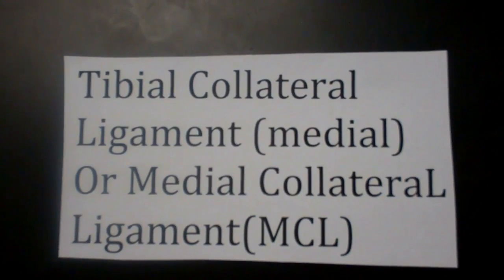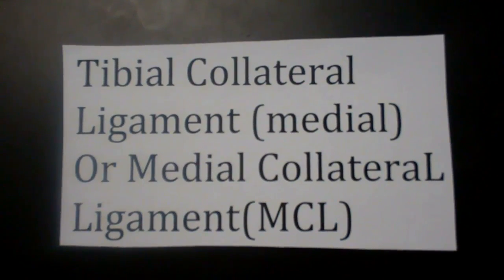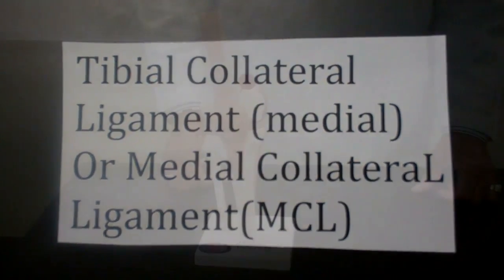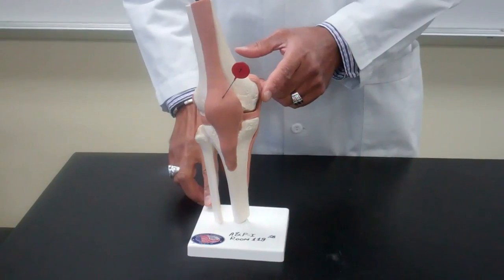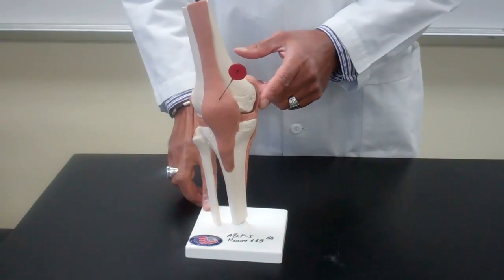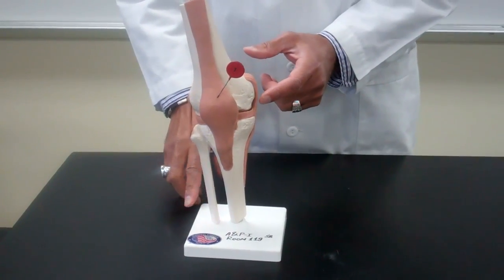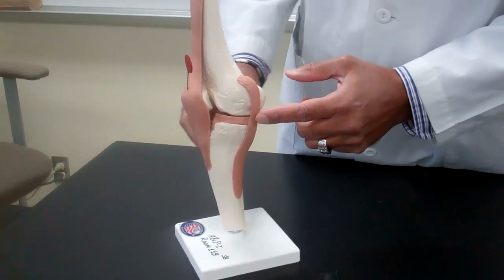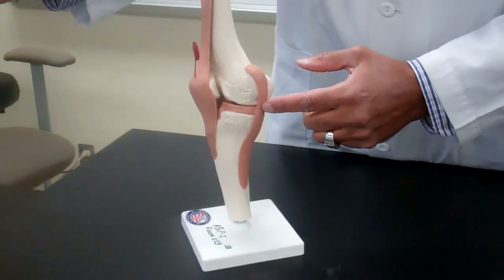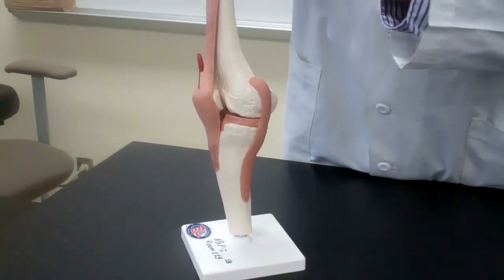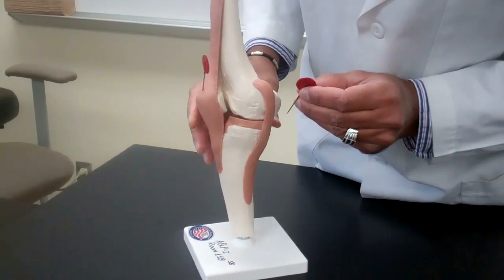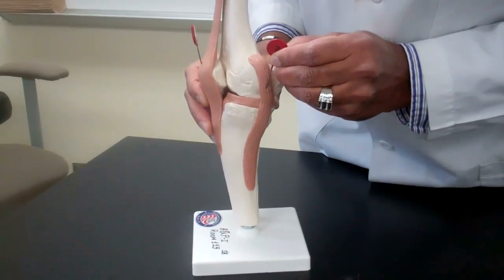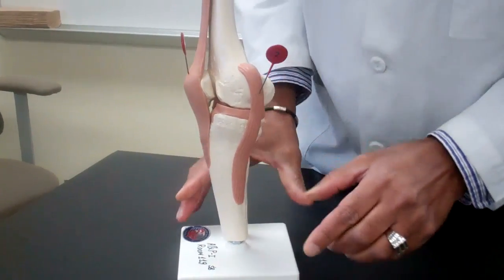Tibial collateral ligament, also known as medial collateral ligament or MCL. The medial collateral ligament or MCL is going to be this ligament here, and we'll label that number two.